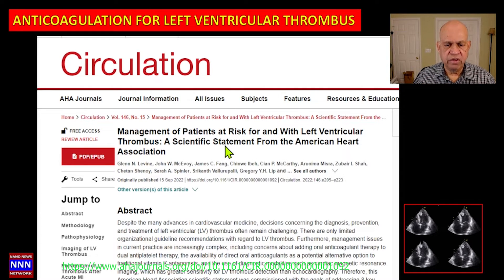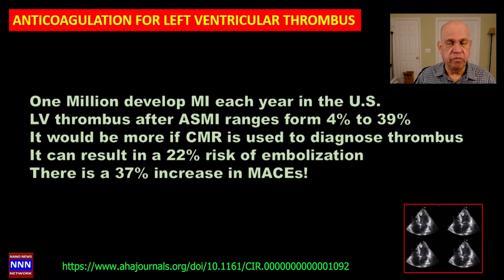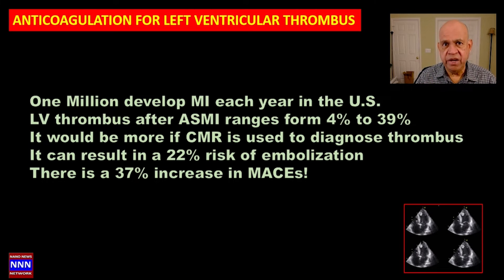A notable article published in Circulation on September 15th, 2022 addresses the management of risk for patients with left ventricular thrombus. It is a consensus opinion article clearly explaining what we should do in the presence of LV thrombus detected on echocardiogram, TEE, CT, or CMR. One million people develop myocardial infarction each year in the United States. LV thrombus is most often seen in patients with anteroseptal MI and can range from 4 to 39% — a wide range reminding us to check echocardiograms for blood clot in every patient with a large anterior or anteroseptal apical MI.